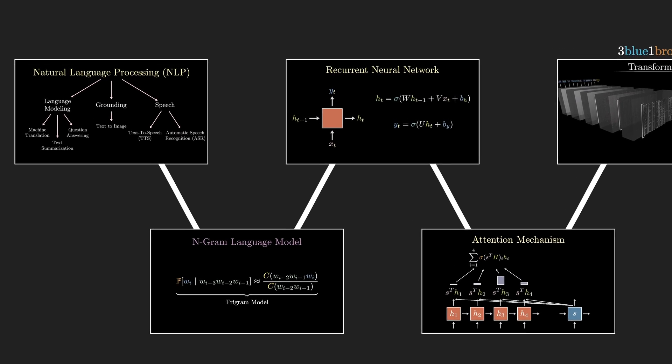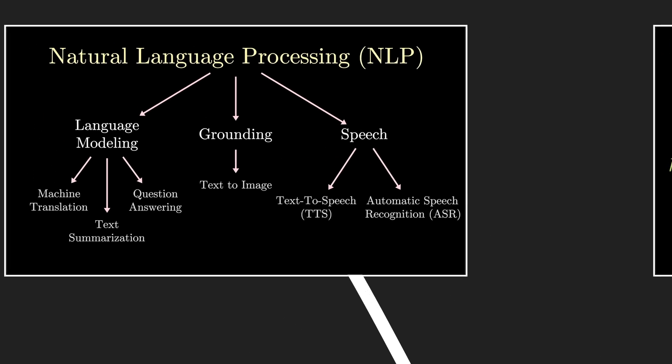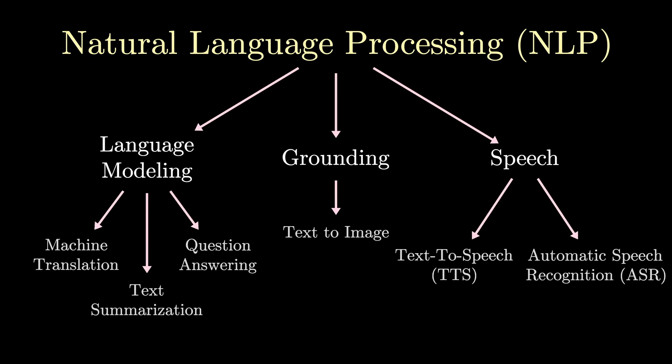The idea of computers being able to understand language, or natural language processing, commonly called NLP, is rich with many different kinds of problems to solve. There's speech, which could involve converting text to speech or converting speech to text, called automatic speech recognition. There's language modeling, which could consist of machine translation, or just translating between languages, text summarization, or question answering. And the last category I'll call grounding, which means incorporating other human senses - so for example, converting text to images.